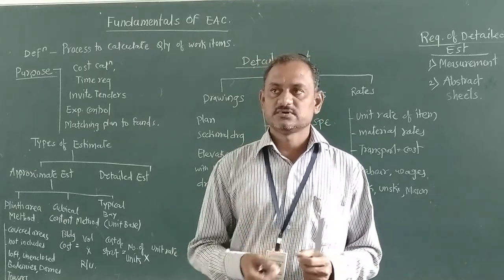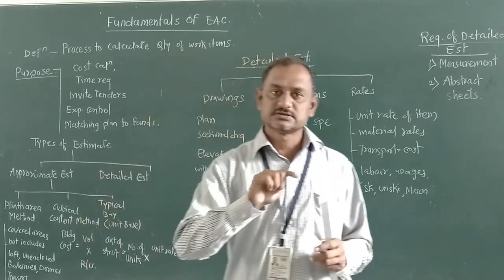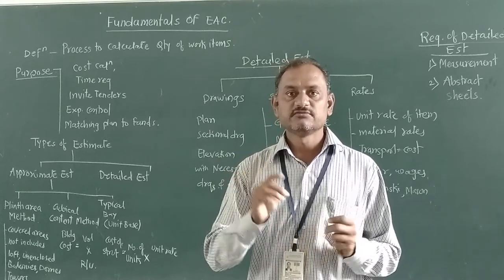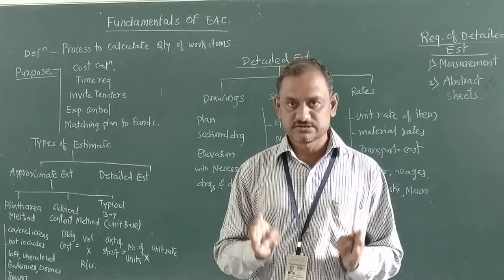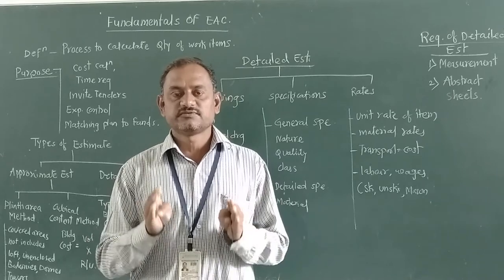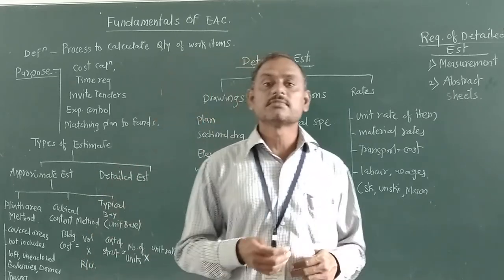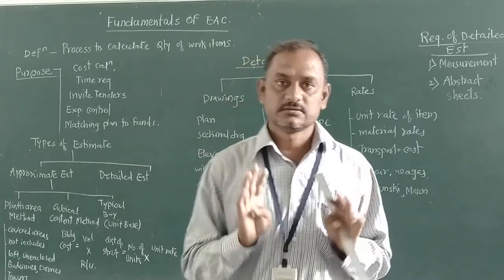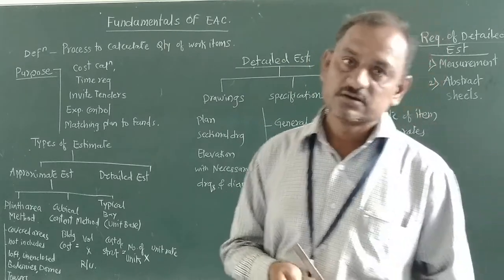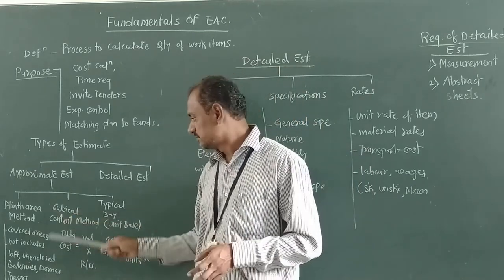These covered areas are to be considered and calculated using the plinth area method. For example, suppose a building has size 5 meters by 10 meters, then the area is 50 square meters. So the plinth area is 50 square meters. Areas which are covered by a deep slab also have to be considered for plinth area calculation of the approximate estimate.